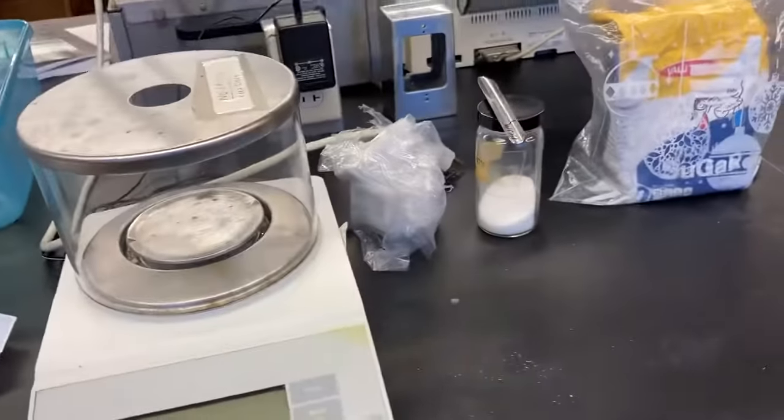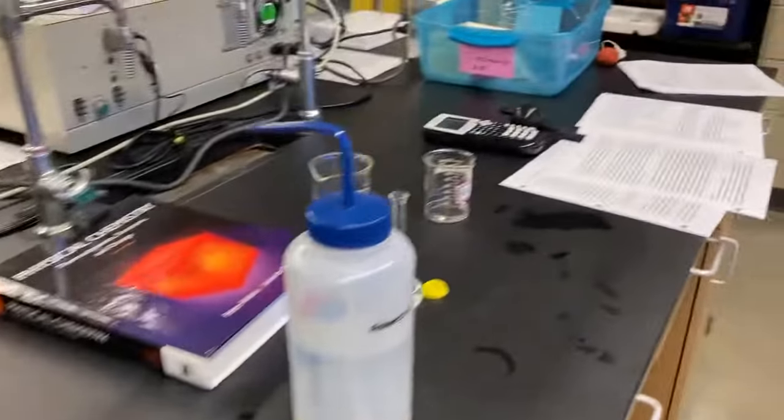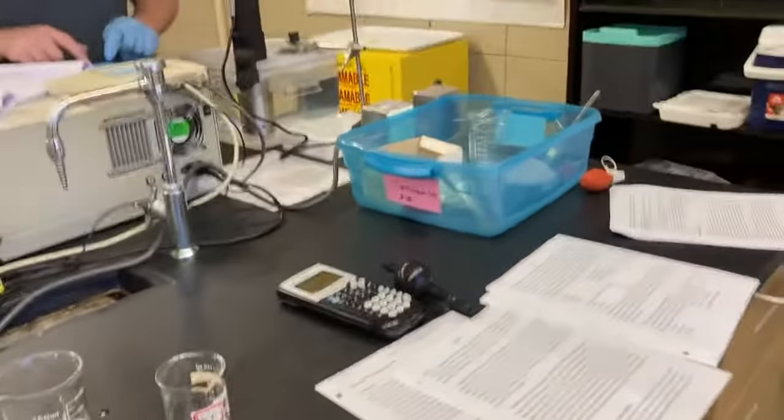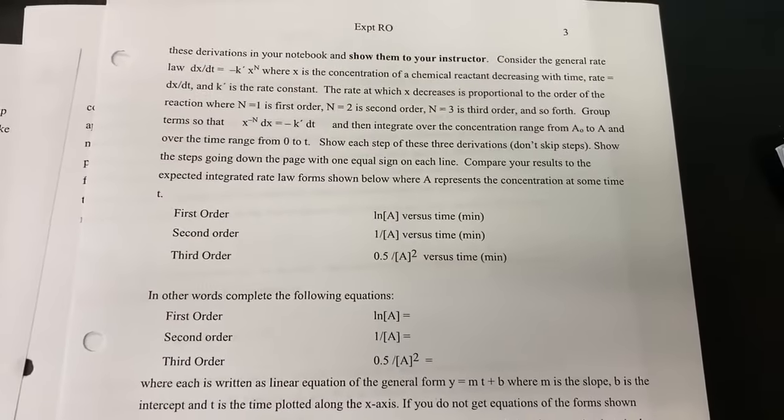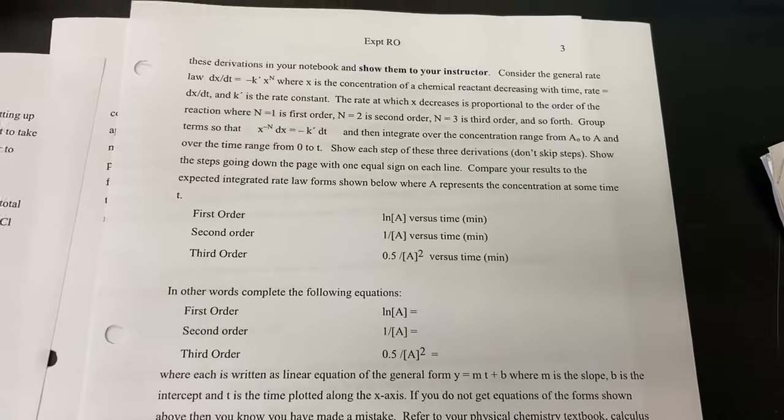We measure our sugar, 20 grams. And we put it together and it's telling us our planes of rotations. And then we're going to find out what order reaction it is, basically.